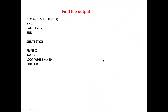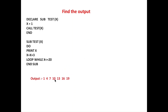Last one — find the output again. The output of this program will be: 1, 4, 7, 10, 13, 16, 19. A DO WHILE loop is used here. If you don't know how it works, check my DO WHILE loop video and then find the output of this program.